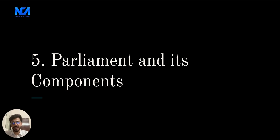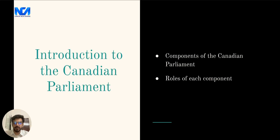Hello and welcome back to Crack NCA Exams. Today we are studying Foundations of Canadian Law, Chapter 5, which is Parliament and its Components. The Canadian Parliament consists of three parts: the Sovereign, which is represented by the Governor General, the Senate, and the House of Commons. Each of these components plays a crucial role in the structure and operation of the Canadian Parliament.